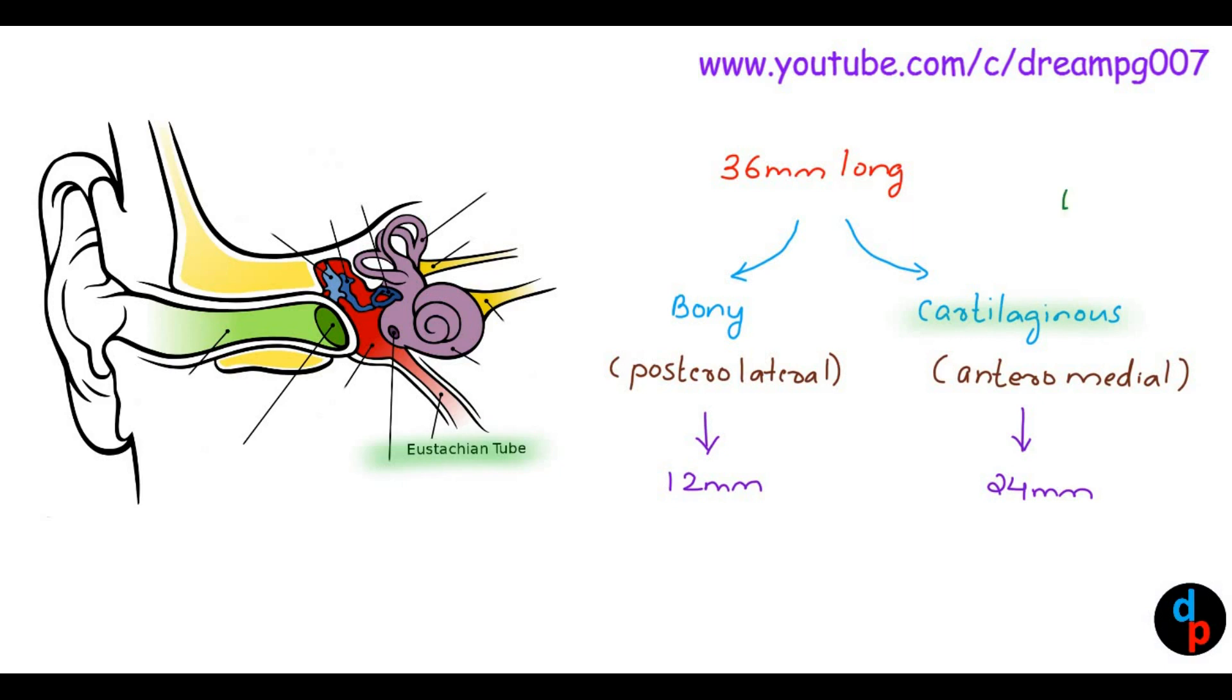What is the type of cartilage seen in the Eustachian tube? It is the elastic fibrocartilage. In the cartilaginous part of Eustachian tube, we can see an elevation from the lateral wall of nasopharynx, and that portion is called as torus tuberius.